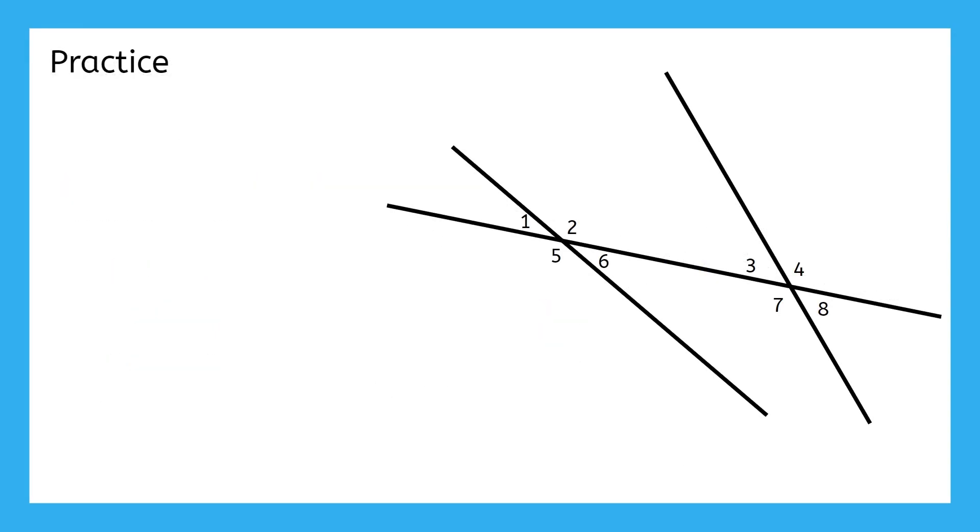This diagram looks a little different than the one we've been working with so far. But everything works exactly the same way. We have two lines and a transversal that goes through them. So pause the video here and use your notes template PDF to identify all of the special angle pairs in this diagram. Don't worry, I'll still be here when you come back.